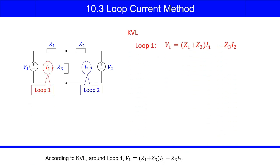According to KVL, around loop 1, V1 equals Z1 plus Z3, times I1 minus Z3 I2.